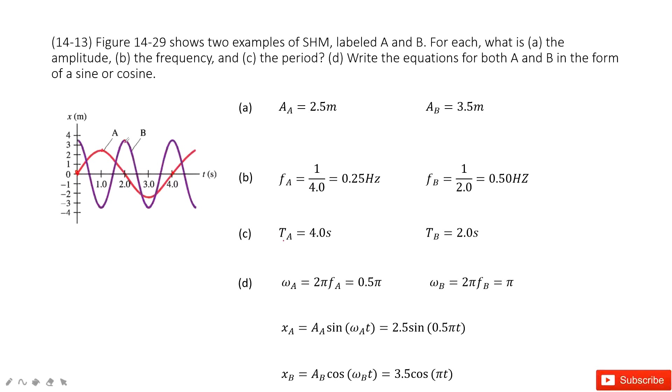Now look at B. The period for B is 2 seconds. From this point to this point, 2 seconds. And then the frequency is 1 over period. So it becomes 1 over 2, 0.5 Hertz.